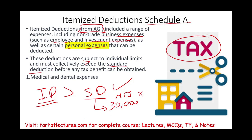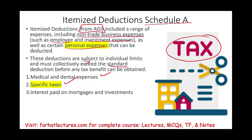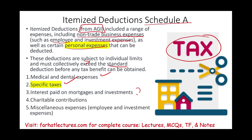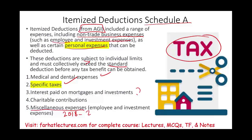If they're not greater, then you would use your standard deduction. Itemized deductions include medical and dental expenses, which we already covered; taxes paid, which we'll discuss in this session; interest paid on mortgage and investments, which we'll discuss in the next session; charitable contributions; and miscellaneous expenses. As a reminder, those miscellaneous expenses are suspended between the year 2018 and the year 2025.